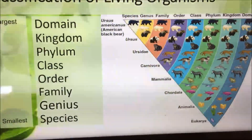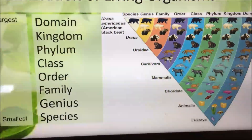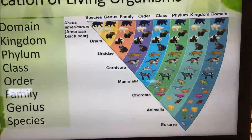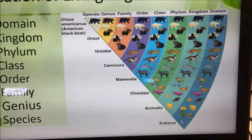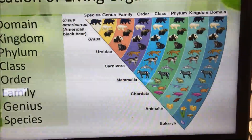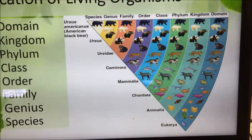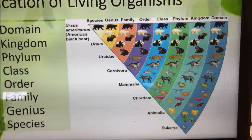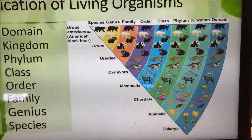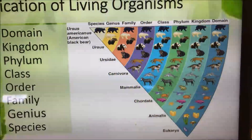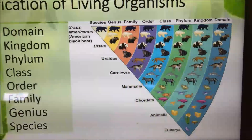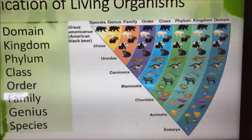We have the common blackbird and we can go through the entire list. We see what domain it's in — it's in the Eukarya. We see it's in the animal kingdom. Then we branch off all the way down until we get to the last two and how we get its name: Ursus americanus.